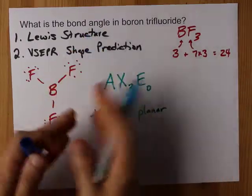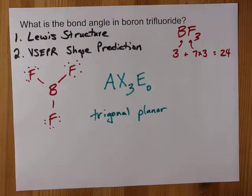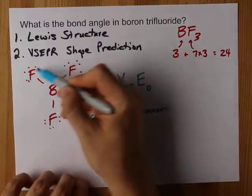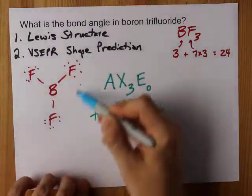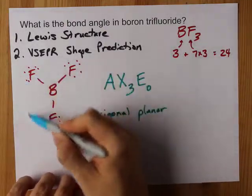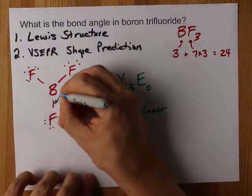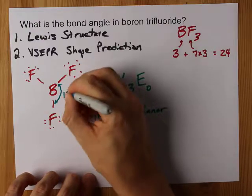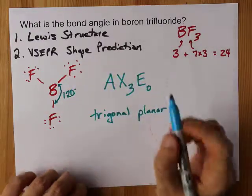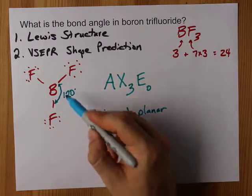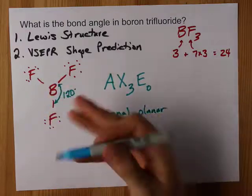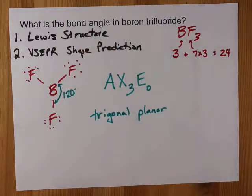And all of these atoms are equally spaced around each other. So you have this circle of space around the boron, and these three Fs are all divided equally amongst it. When you divide a circle into three bits, that 360 degrees gets broken up into three 120s. That's how you're predicting the bond angle in this case.